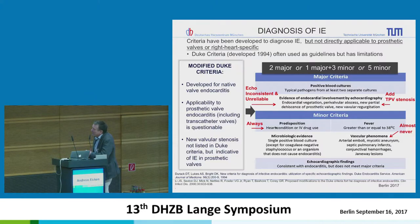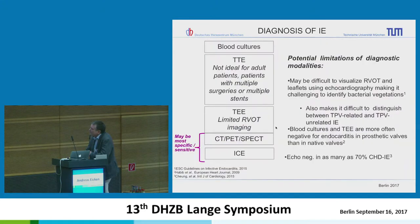But these criteria were developed for native valve endocarditis and the applicability to prosthetic valve endocarditis is very questionable. New valvular stenosis is not listed in the Duke criteria, but is indicative of infective endocarditis in prosthetic valves.